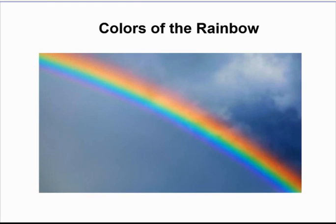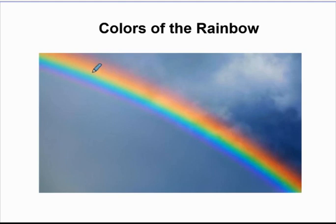So when you look at a rainbow, boys and girls, what colors are in a rainbow? This is a picture of a rainbow in the sky. What colors do you see? If you look closely, you'll see there's a reddish color, orange color, a yellow color, a green color, a blue color, and right at the tip you see a purplish color. Some people refer to this color as violet because it is more of a blue tone.